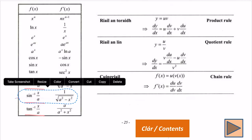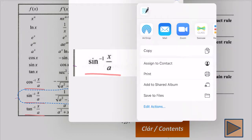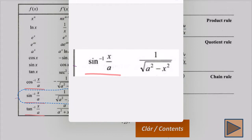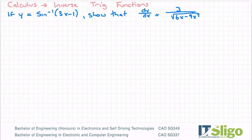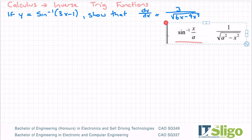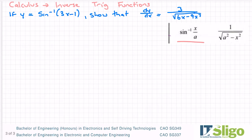Sine inverse of x over a is equal to 1 over the square root of a squared minus x squared. So that's what I'm going to end up doing. I'm going to do this question two ways.